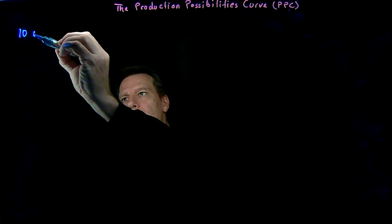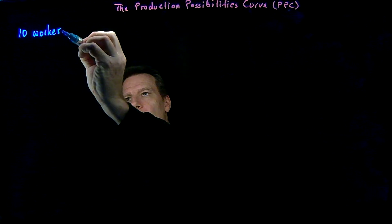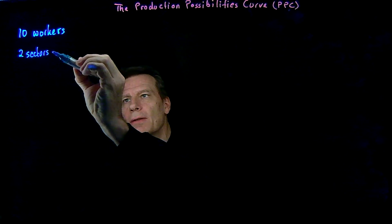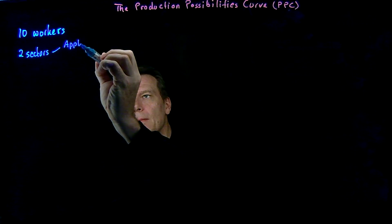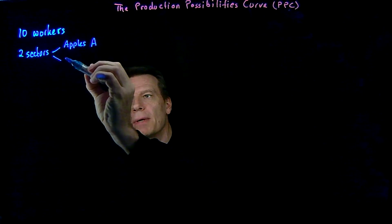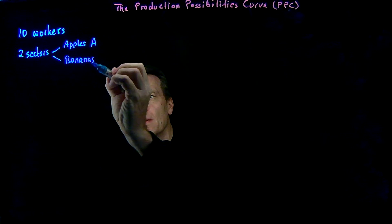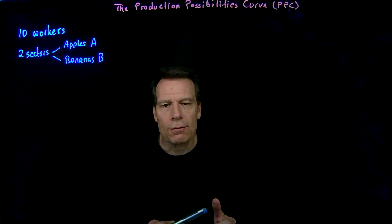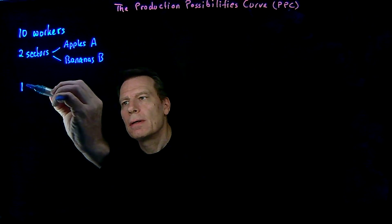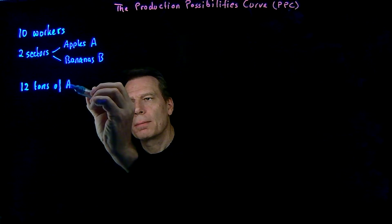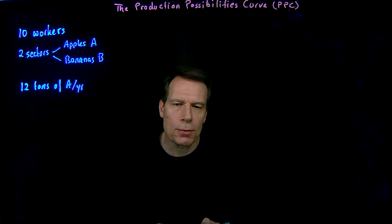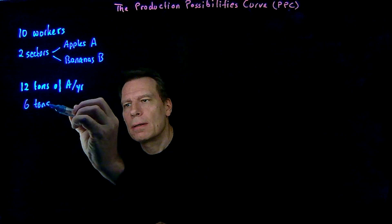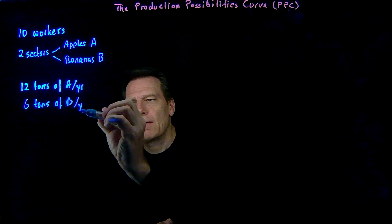In this economy, there are 10 workers. And this is an agrarian economy in which there are only two sectors. There's the sector that grows apples, which we'll call the A sector, and there's a sector that grows bananas, which we'll call the B sector. We'll assume that each worker, if they worked at full capacity, would be able to produce up to 12 tons of apples per year if all they did was produce apples. And each worker, if they worked at full capacity, would be able to produce up to 6 tons of bananas per year if all they did was produce bananas.